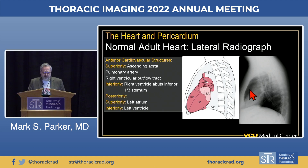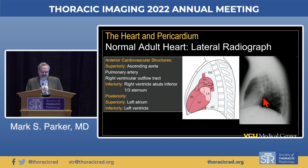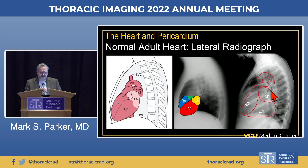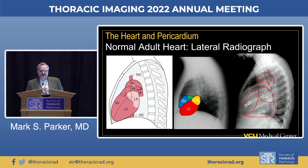Posteriorly, the superior posterior border is created by the left atrium, and the inferior border by the left ventricle. The space between the myocardium and the spine is referred to as the retrocardiac clear space. Knowledge of the shape and morphology of these chambers is very helpful for recognizing single or multi-chamber enlargement on a lateral chest radiograph.